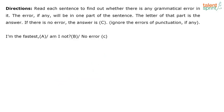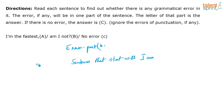I am the fastest, am I not? The error is in part B. Because with sentences that start with 'I am,' in question tags the tag is 'aren't I.' So: 'I am honest, aren't I?' and 'I am pretty, aren't I?' That's the special rule for 'I am' sentences.